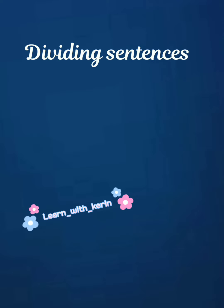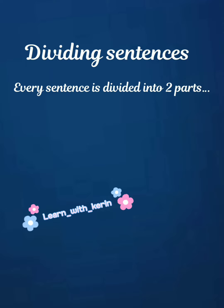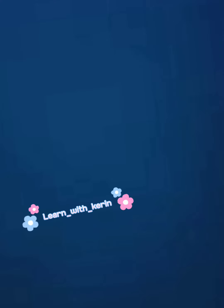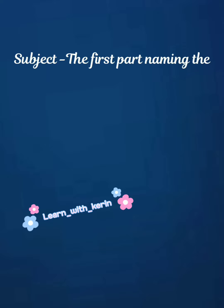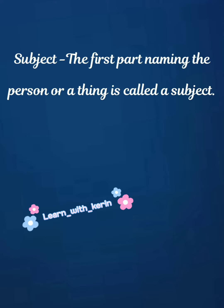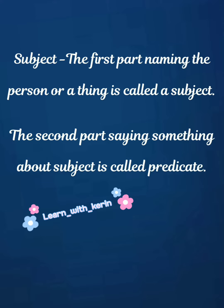Children, now let us know what is a subject and a predicate. Every sentence is divided into two parts: number one, subject, and number two, predicate. The first part naming the person or thing is called the subject, and the second part saying something about the subject is called predicate.